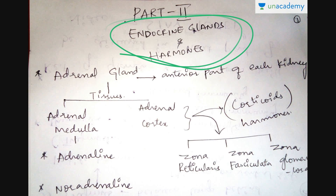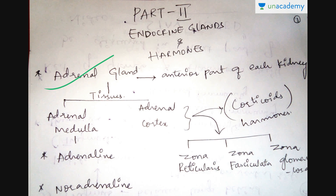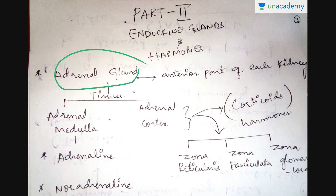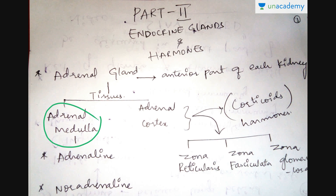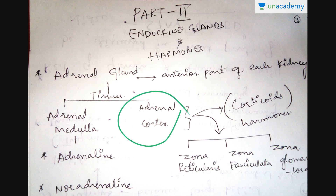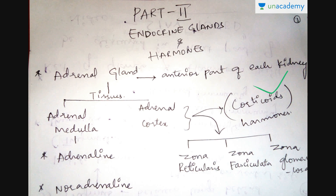Coming to the lesson — the adrenal gland. The adrenal glands are present on the anterior part of each kidney. This adrenal gland is made up of two types of tissues: adrenal medulla and adrenal cortex. Adrenal medulla secretes two types of hormones called adrenaline and noradrenaline, and adrenal cortex secretes hormones called corticoids.